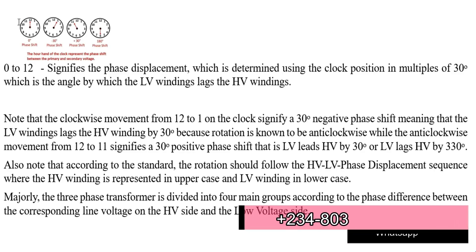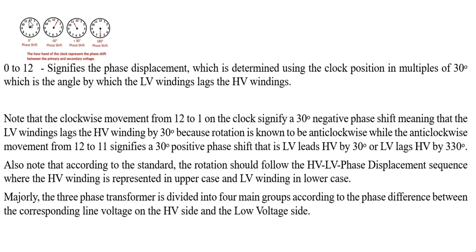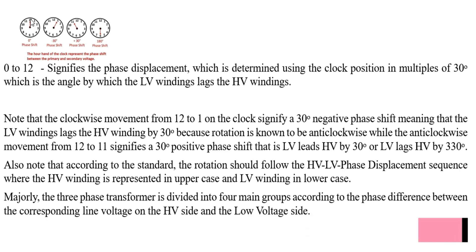We are going to be using the clock sign. Look at the screen — you can see 12 o'clock, 1 o'clock, 11 o'clock, and 6 o'clock. When it is at 12 o'clock, the phase shift is zero, meaning there is no phase shift between the low voltage winding and the high voltage winding. From 12 to 1 is standardly 30 degrees. The total clock symbol represents 360 degrees — from 12 to 1, 1 to 2, each step is 30 degrees, all the way around back to 12, which equals 360.